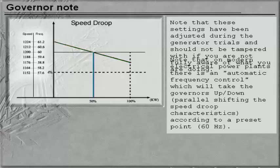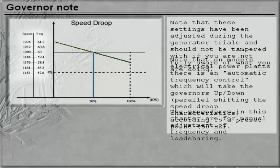Note that on modern electrical power plants there is an automatic frequency control which would take the Governors up or down according to a pre-set point. The procedures in this chapter are for manual adjustment of frequency and load sharing.